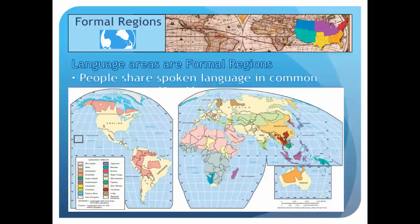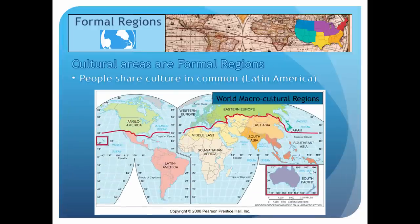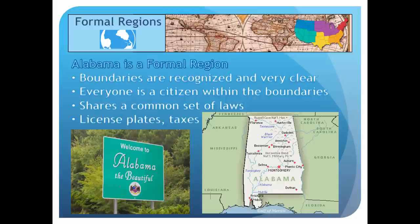Language areas can be formal regions based on cultural traits — people share related languages in common, and we can draw conclusions that culture may be similar in these regions. We also have world culture regions, often tied into language, where people typically share similar languages, religions, and customs. We can also look at political entities such as counties, states, countries, and provinces — all formal regions defined by a common political identity. For example, Alabama's boundaries are clearly drawn, and everyone living there is a citizen under the same laws and paying the same state taxes, making it a formal region.